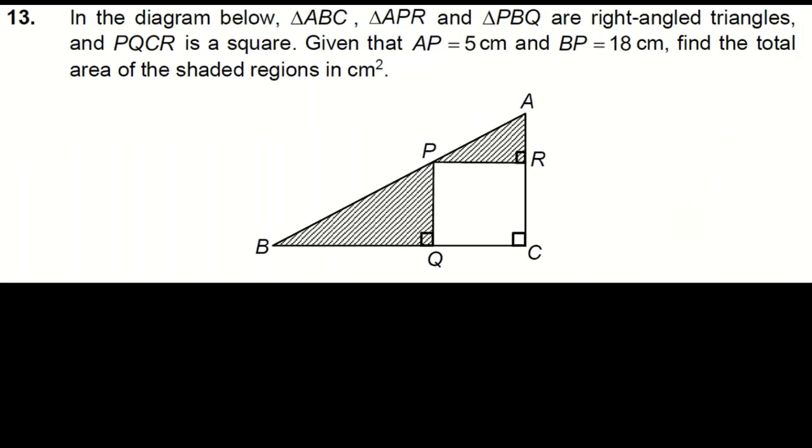Moving on to question 13. It represents a scenario where triangle ABC, APR, PBQ are right angle triangles, and PQCR is a square. Given that AP is 5CM and BP is 18CM, we need to find the total area of the shaded regions.